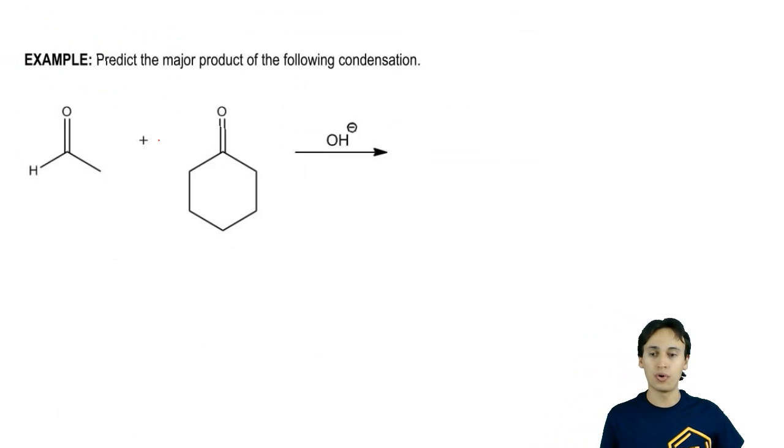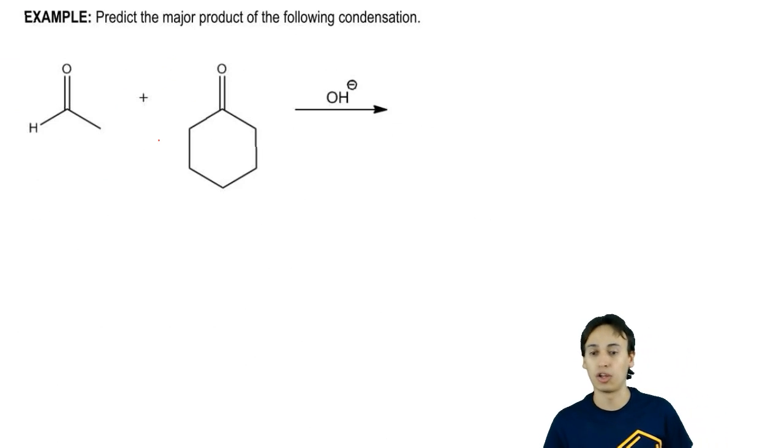You guys got this. Go ahead and predict the major product of the following Claisen-Schmidt condensation. Notice I have a ketone and an aldehyde. Notice they're both enolizable. Try to predict it and then I'll show you guys what the answer is.